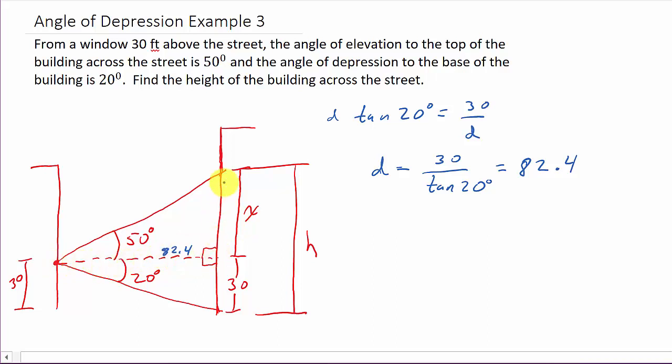All right. So, now I'm going to use this triangle here, and look at this. There's my right angle. That's opposite. That's adjacent. Opposite and adjacent is tangent again. So, I've got tangent of 50 degrees is equal to opposite over adjacent, 82.4.